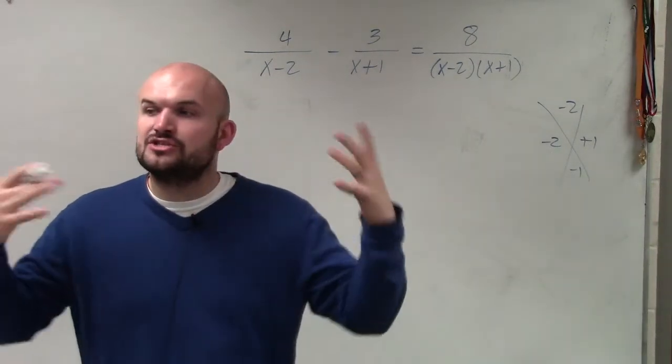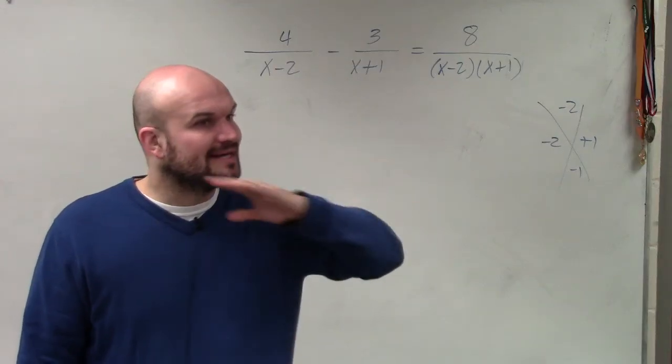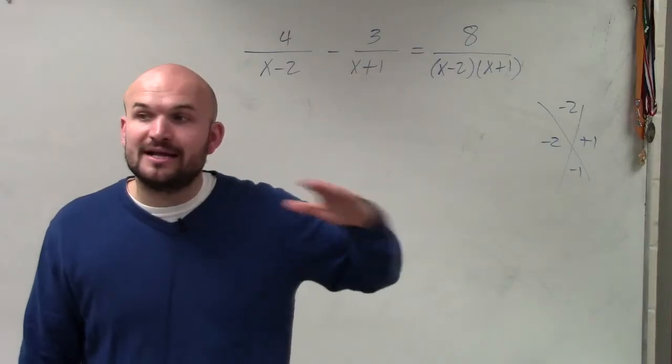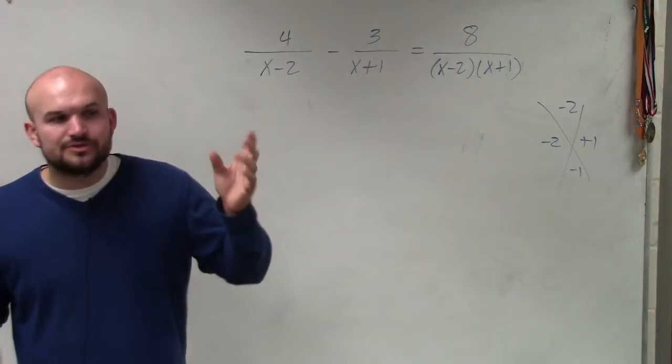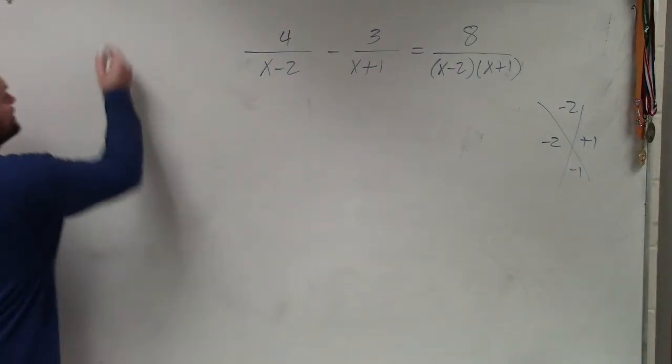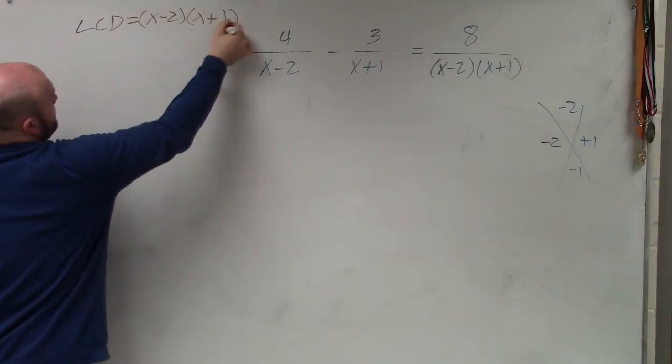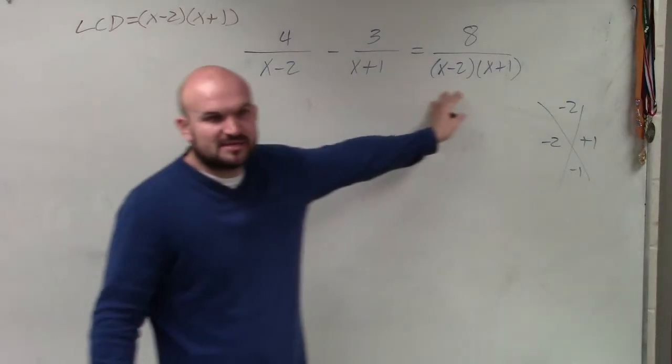Here, we're trying to solve. What we're trying to do is eliminate denominators. We don't want any fractions. So to eliminate fractions, we're still going to determine the LCD, which by determining the LCD in this case is going to be x minus 2 times x plus 1.